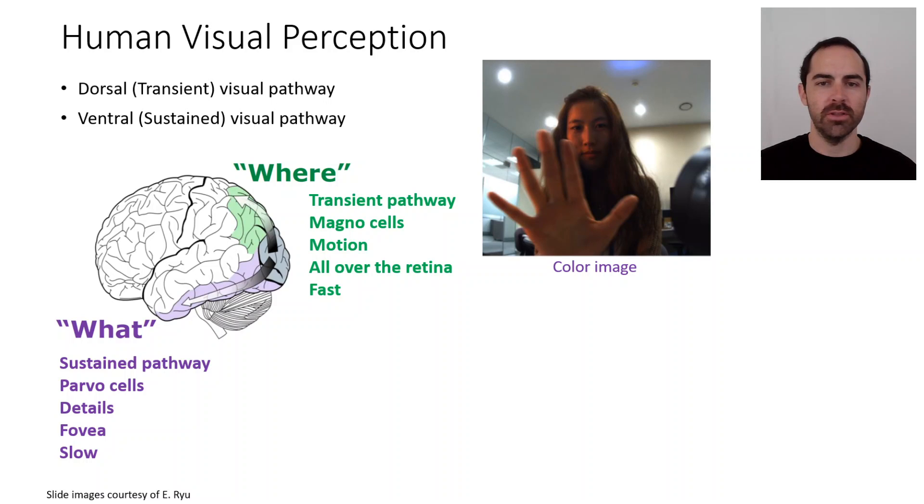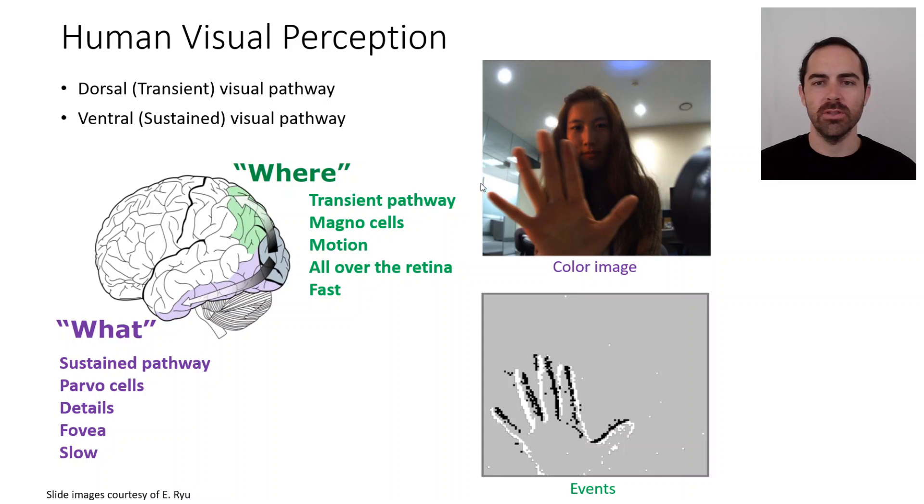If we had to show a different image for each of these pathways, this is an oversimplified view, but the visual representation of the information in the what pathway would be a sharp foveated image of the scene where we can see the subject everything in focus.